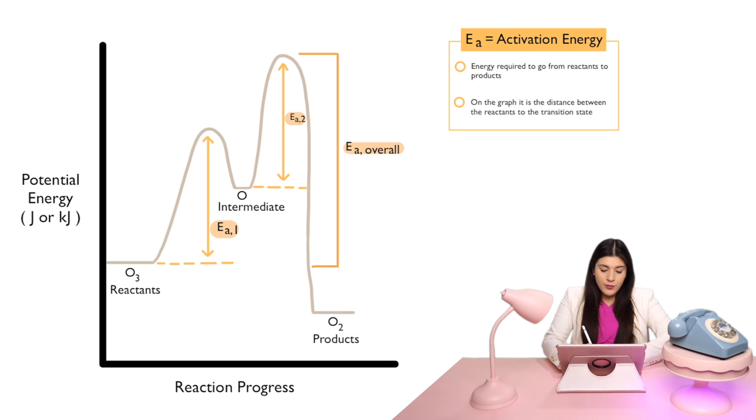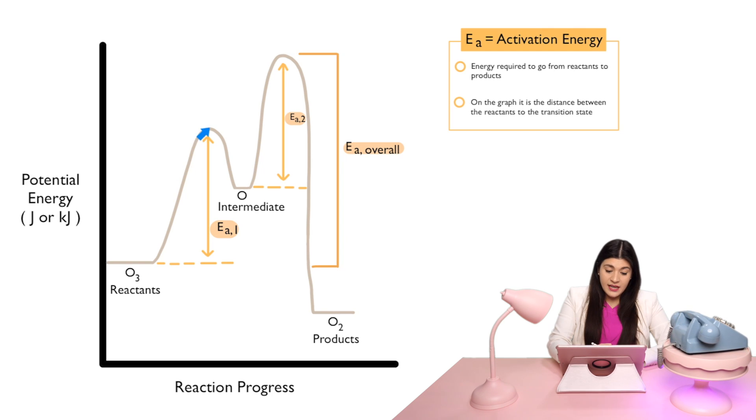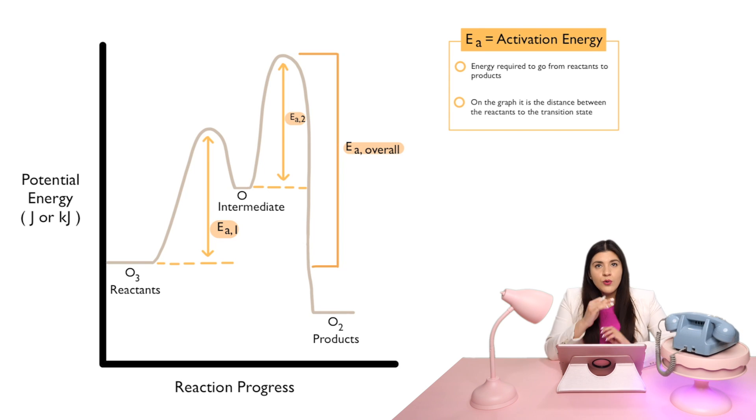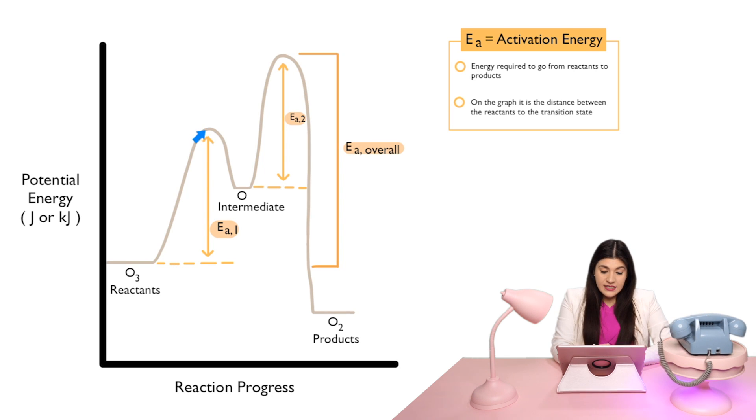So, in this case, instead of our products, because we have these transition states or these two distinct hills, then I know I'm going from the reactants to this transition state. That's my first activation energy. And how we're always going to measure this on the graph, it's the distance between our reactants and that transition state or activated complex. Or the highest point. That's what I want you to know.